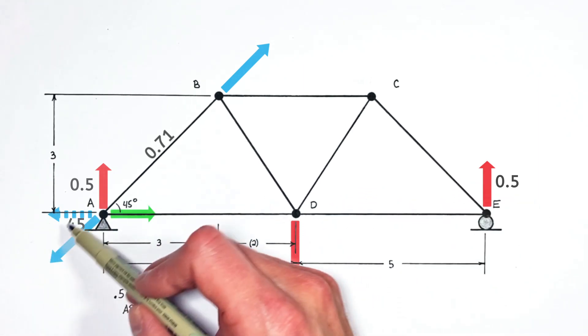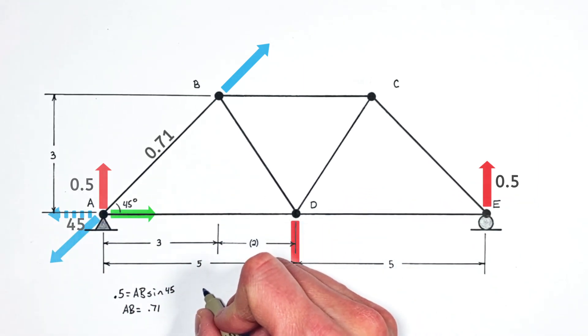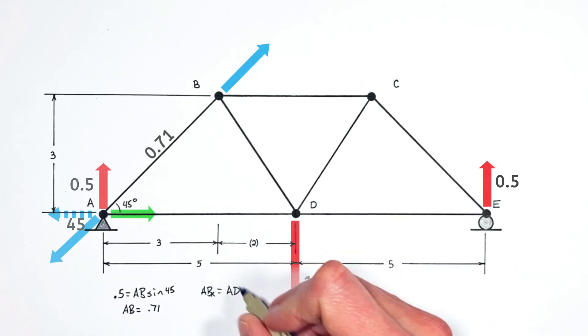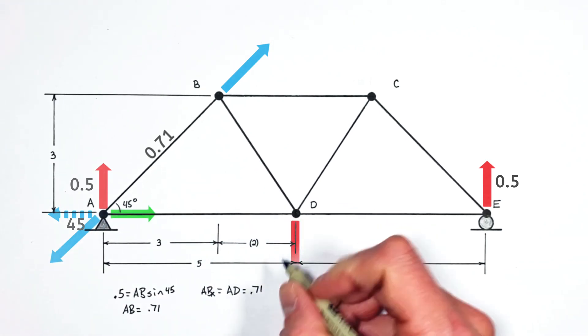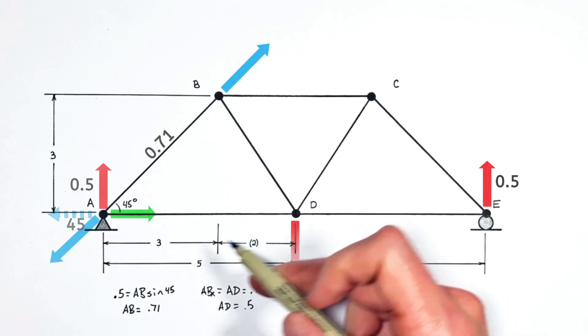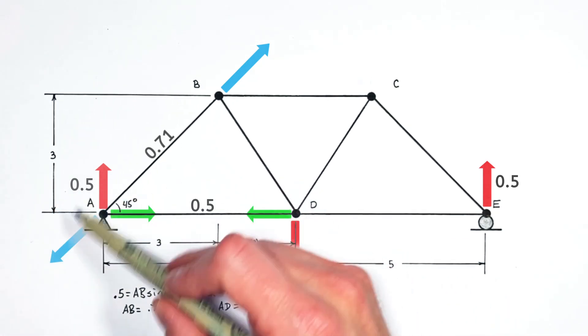So solving for the horizontal component of AB, I'm going to call that ABX, we can say that's equal to AD. That's going to be the length of AB, that's 0.71, multiplied by the cosine of this angle in here, again that's 45 degrees, which means the force in AD is 0.5. So having worked out everything right here at joint A, we can now turn our attention up here to joint B.